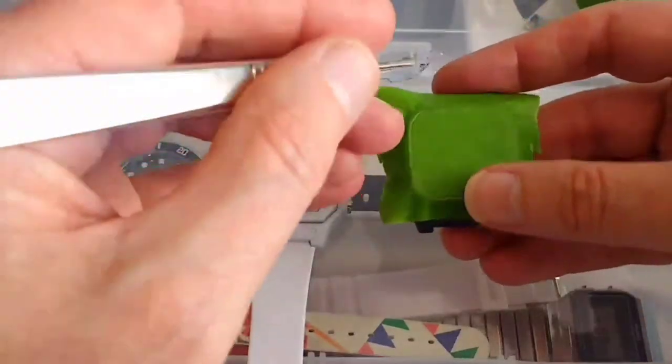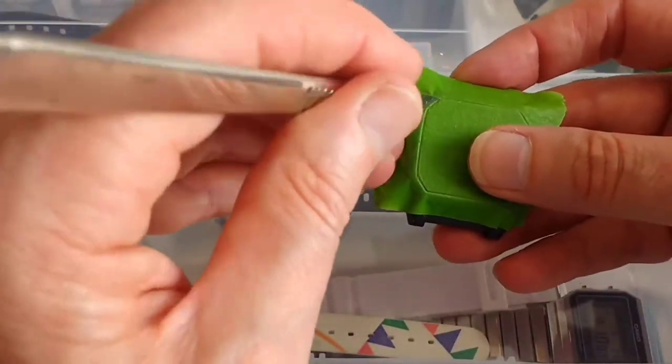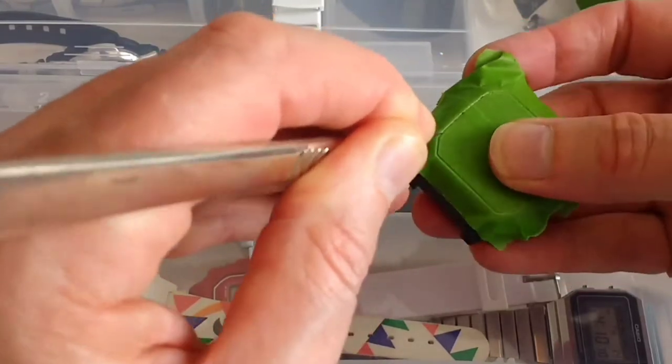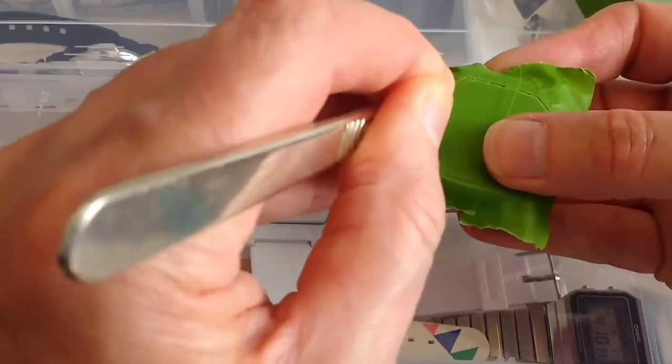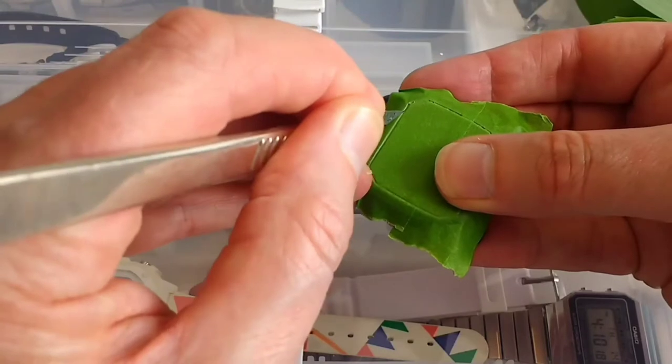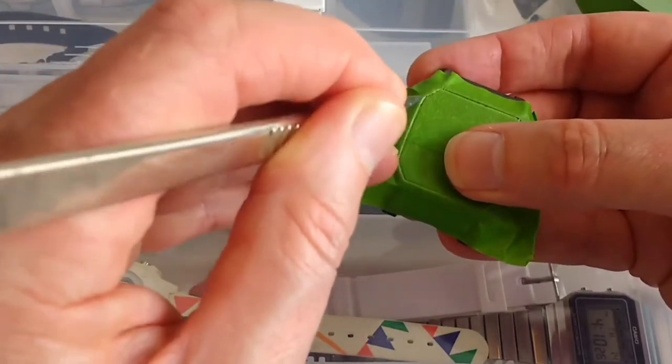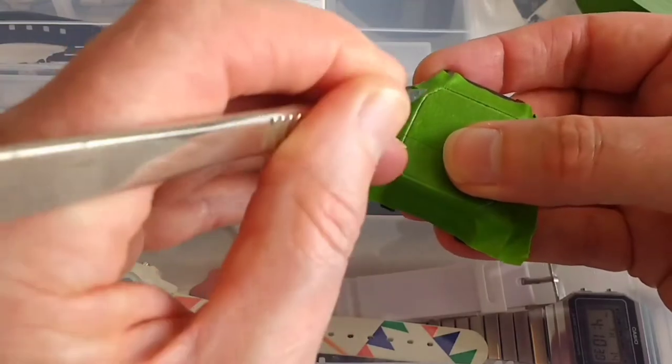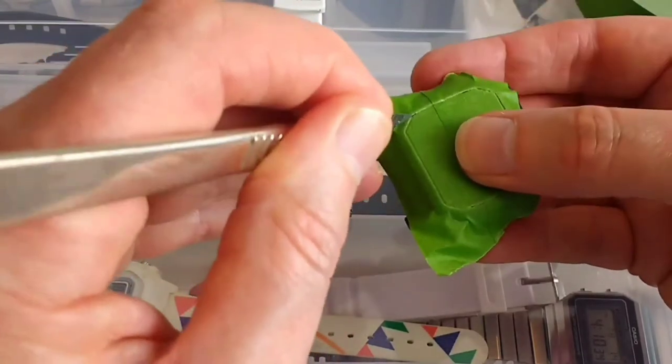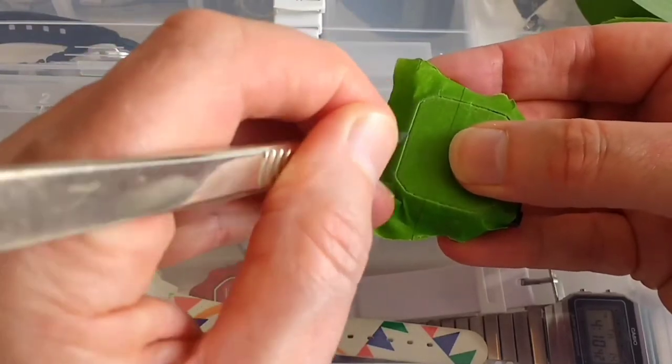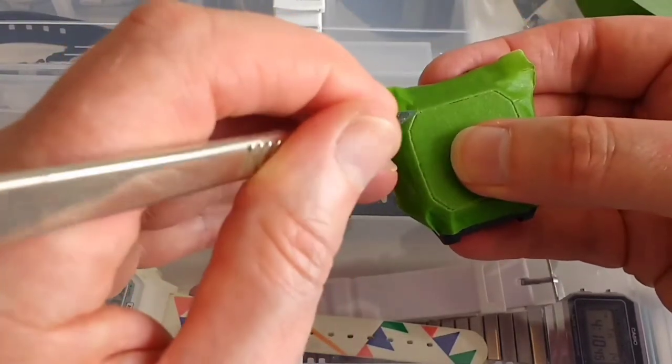Then take a sharp knife or a scalpel, which is probably ideal because it's got a very thin point, and very gently work your way around the edge not pressing too hard otherwise you'll cut into the plastic beneath. You just want to go through the actual masking tape.